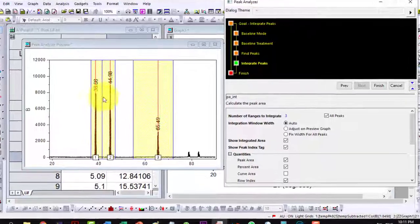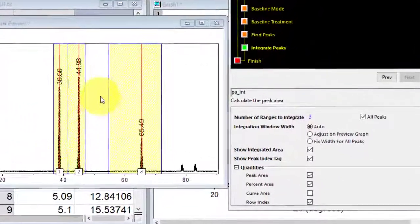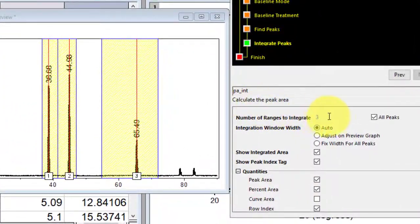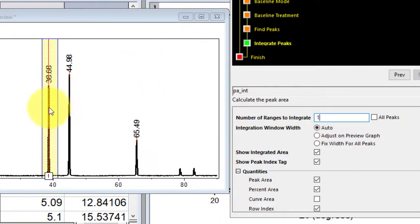Now it will indicate some area here, and all peaks are selected here, and the number of peaks are three. Now if I want to select only one peak from it, then I can untick this one, and here I write only one peak, and you see only one peak is selected.